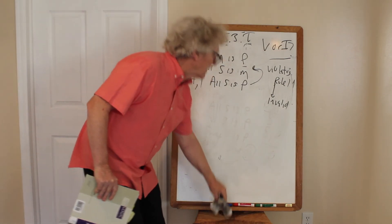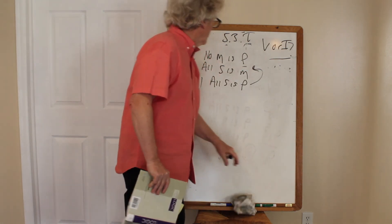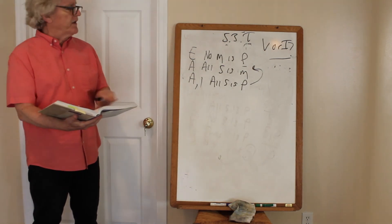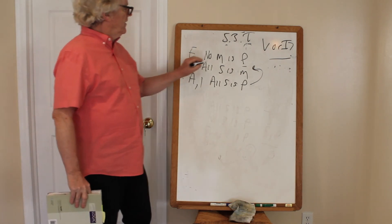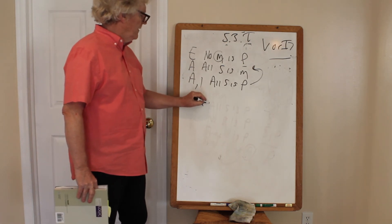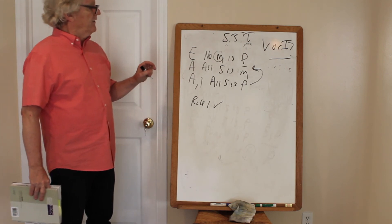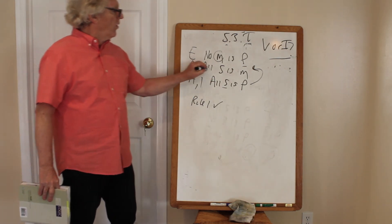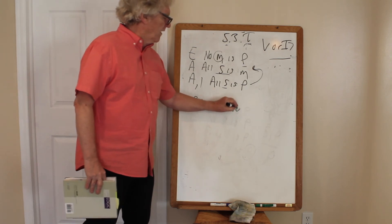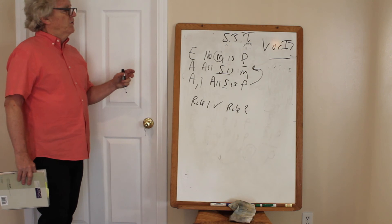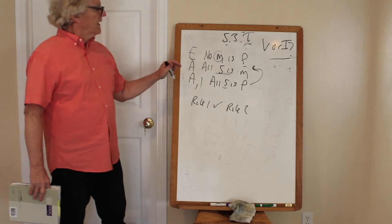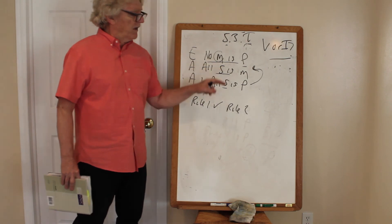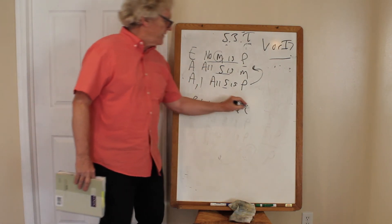The goal is to decide whether these arguments are valid or invalid. Rule one: the middle term must be distributed at least once. No M is P distributes the middle term — rule one check. Rule two: any term distributed in the conclusion must be distributed in a premise. All S is P distributes S; all S is M distributes S — rule two check. Rule three: two negative premises are not allowed. We have one negative premise and one affirmative — rule three check.